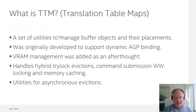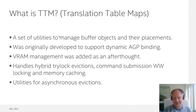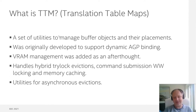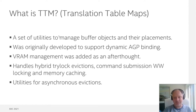TTM was originally developed to support dynamic AGP binding. At that time, reading out from AGP was very slow — and I guess it still is. So the idea was that if we take the buffer object out of AGP and read from it, we could do that in a much faster way with CPU caching and prefetching. That turned out not working so well as originally thought because of caching issues. But anyway, that's really how TTM started.